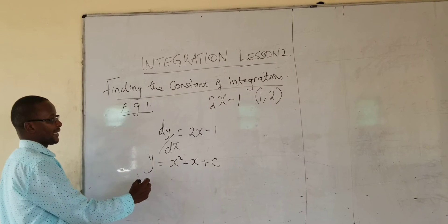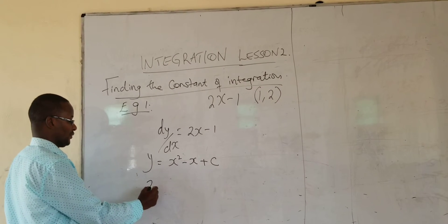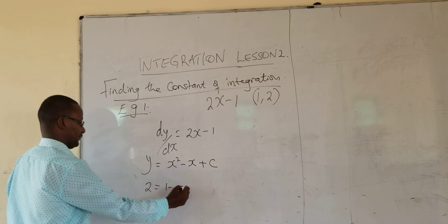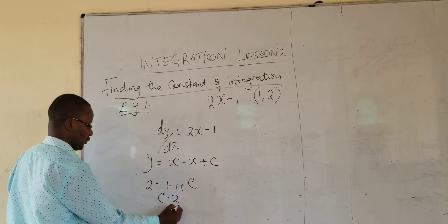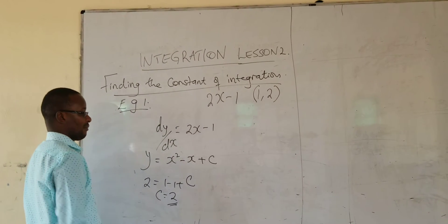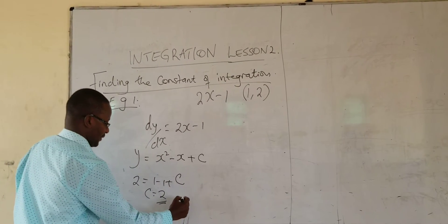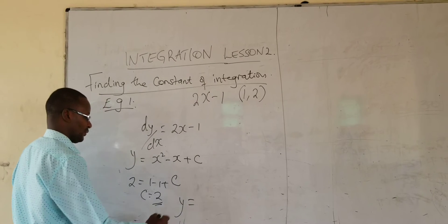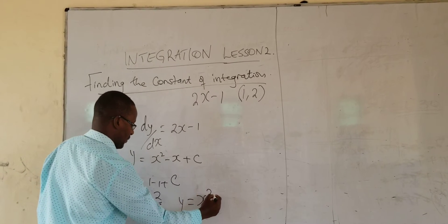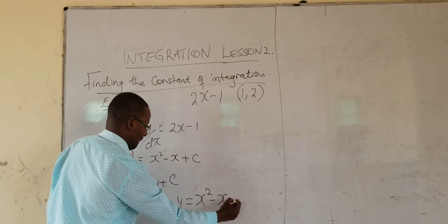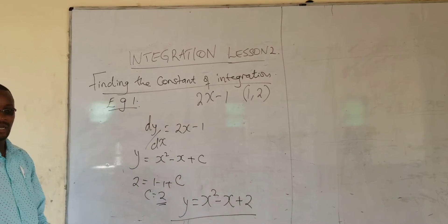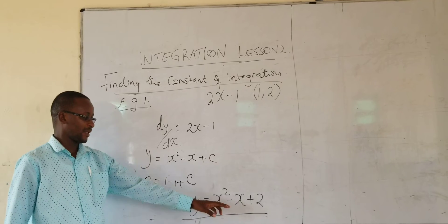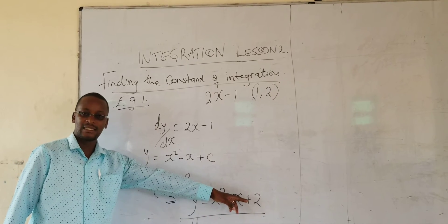So you substitute and get when y is 2, x is 1. So our C is going to be 2. And the equation becomes y is equal to x squared minus x plus 2.